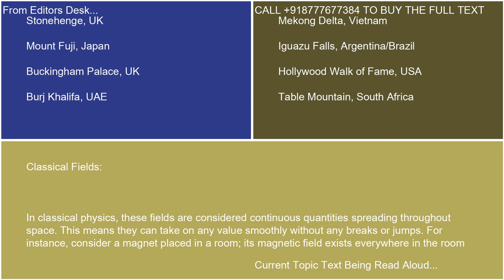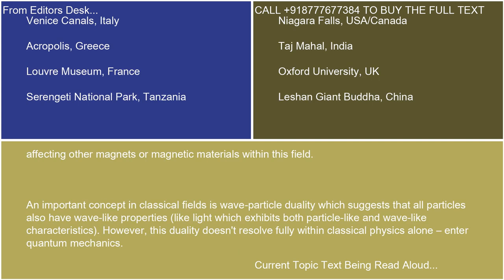For instance, consider a magnet placed in a room. Its magnetic field exists everywhere in the room, affecting other magnets or magnetic materials within this field. An important concept in classical fields is wave-particle duality, which suggests that all particles also have wave-like properties, like light which exhibits both particle-like and wave-like characteristics.